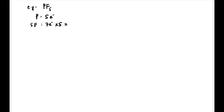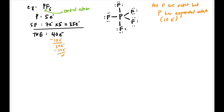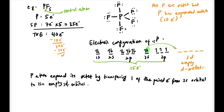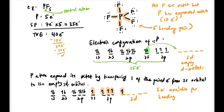Next, PF5: P has 5 valence electrons, F has 7 × 5 = 35, total = 40 electrons. P forms 5 bonds using 10 electrons, leaving 30 placed on the F atoms — all F octet. P has 10 electrons — expanded octet. P has one paired electron in its ground state; it expands by transferring that electron to the empty 3d orbital, giving 5 electrons available for bonding — 5 covalent bonds, 10 electrons total. This is because P has empty 3d orbitals.